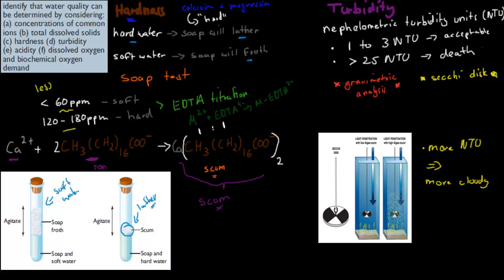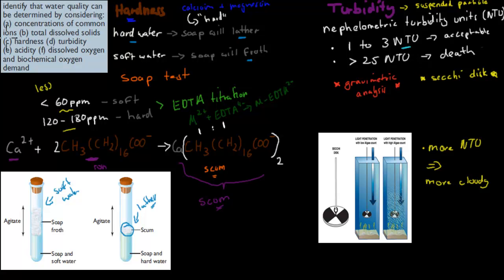Next is turbidity. The measuring unit is Nephelometric Turbidity Units, or NTU. Turbidity is a measure of suspended particles — particles that are still solid and floating in the water, as opposed to being dissolved. One to three NTUs is acceptable for drinking water. Above 25 NTU is where problems begin, so it is important to keep turbidity relatively low.